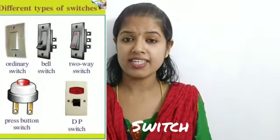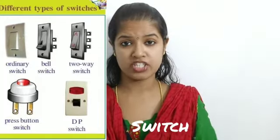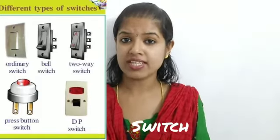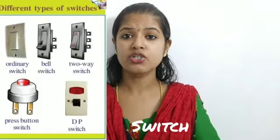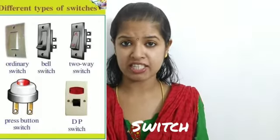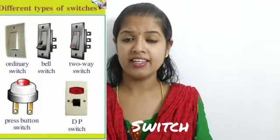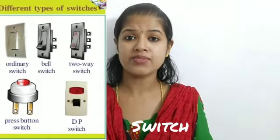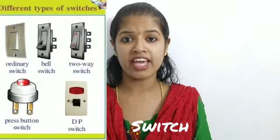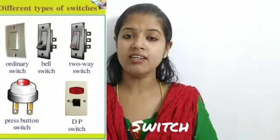The first type is the ordinary switch. This is the switch we use in our houses to operate electric appliances like electric bulbs, lights, and fans. Whenever we want to stop it, we can switch it off, and whenever we want it, we can switch it on.